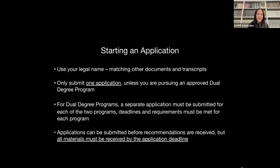You can only submit one application per cycle. If you are interested in an approved dual degree program, that is the only time you can submit two applications, and you need to do that concurrently. All applications will be reviewed during the review period, which is from January through March.